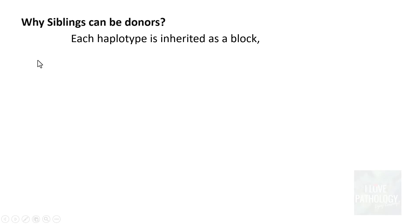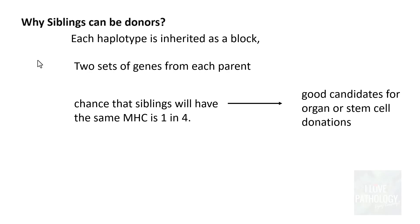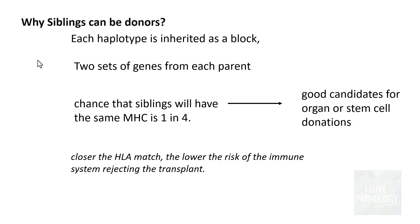Siblings can serve as donors because each HLA haplotype is inherited as a block from one parent, meaning the chances that two siblings share the same major histocompatibility complex is one in four. That is why siblings are good candidates for organ or stem cell donations. The closer the HLA match, the lower the risk of immune rejection of the transplant, which is why HLA matching must be performed before any organ or stem cell transplantation.